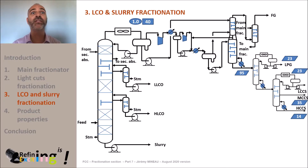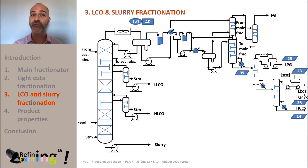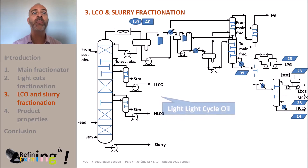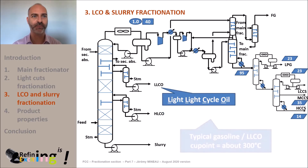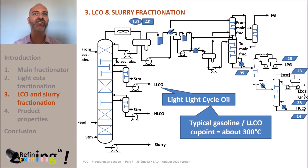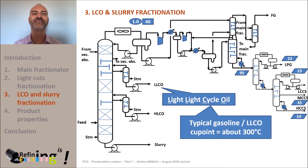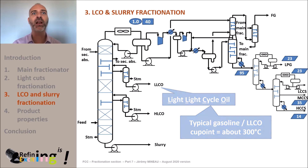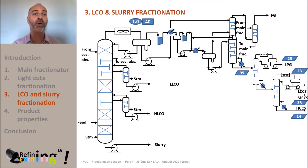It's now time to look at the fractionation section of the heaviest cuts. The first cut we will recover is called the LLCO, for light light cycle oil. This stream will be typically cut at about 300 degrees C. For the same reasons as those described in the MOOC dedicated to atmospheric distillation, a side stripper will be installed to correct — meaning increase — the flash point of the product. The flow rate of this stream will be typically around 14 tons per hour of LLCO.